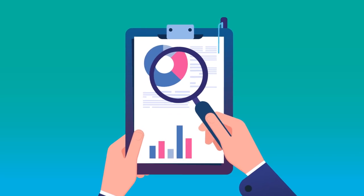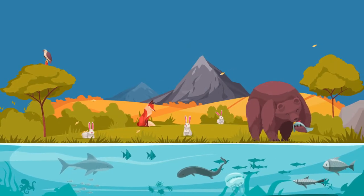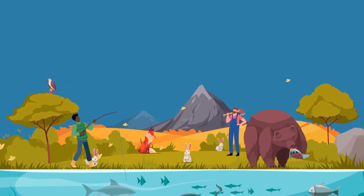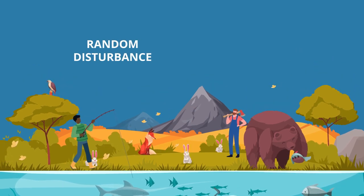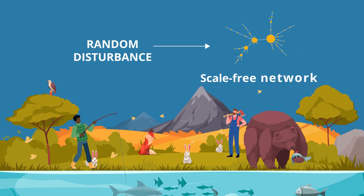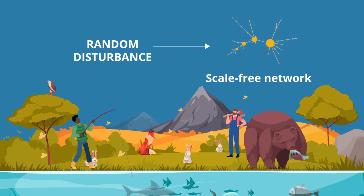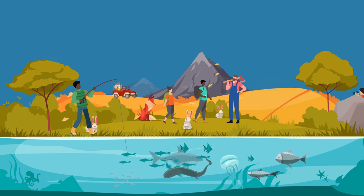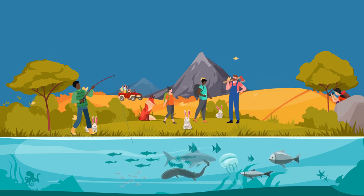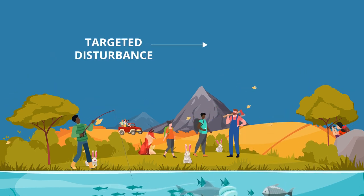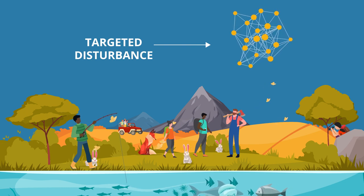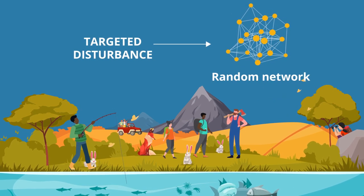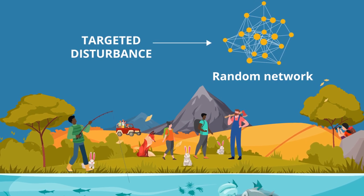Drawing from previous studies, they assumed that ecosystems with lower human pressure were more likely to be exposed to random disturbances, and networks with scale-free degree distributions would naturally emerge. In contrast, those with higher human pressure were more likely to be exposed to targeted attacks, and in these ecosystems, networks with random degree distributions would be preferred, which are more resistant to such disturbances.